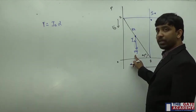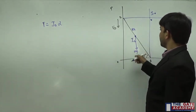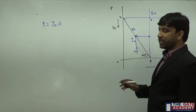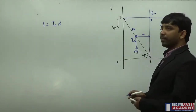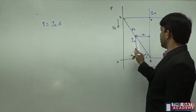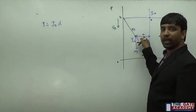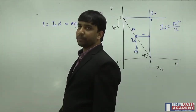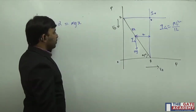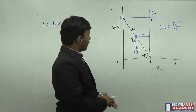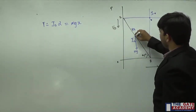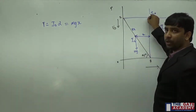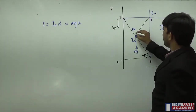The torque acting on this particular rod is mg times x, where x is the perpendicular moment arm from the line of action of mg to the instantaneous center. To find I₀ using the parallel axis theorem, I need the perpendicular distance between the center of mass and the instantaneous center, calling it 'a'. The angle is 45 degrees, and the center of mass lies at the midpoint of the rod, so this distance from the midpoint is root 2 by 2.